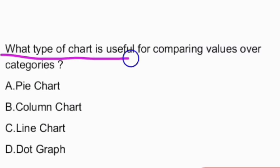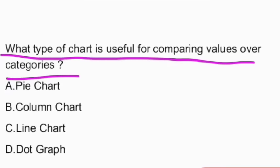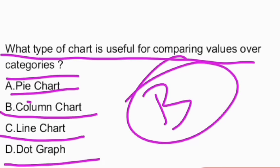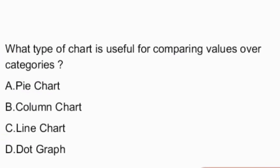Next question: what type of chart is useful for comparing values over categories? The options given are pie chart, column chart, line chart, or dot graph. The answer is option B, column chart.